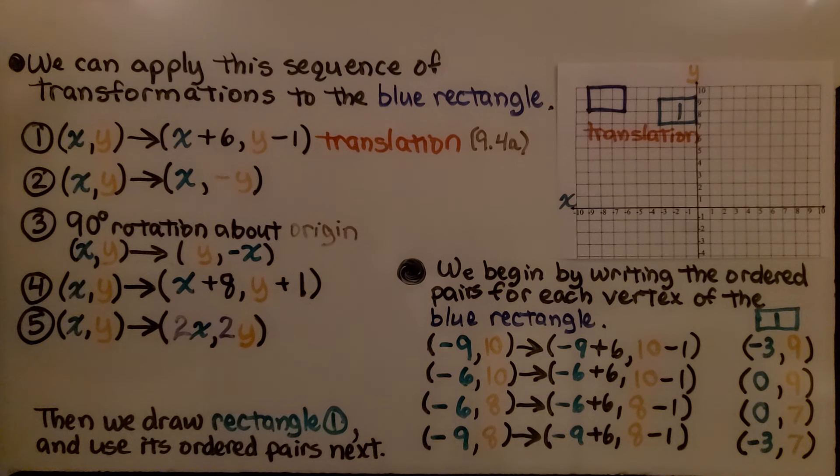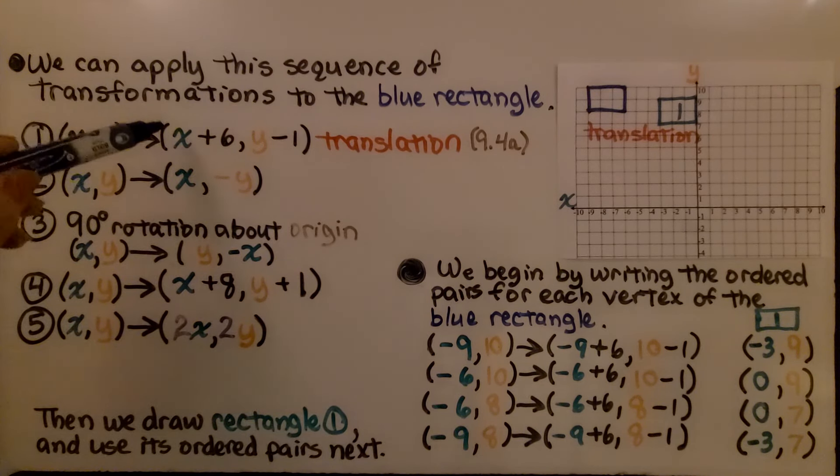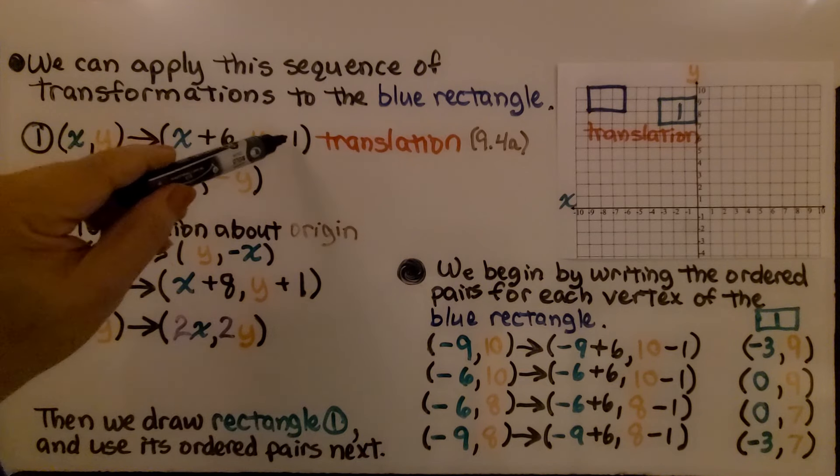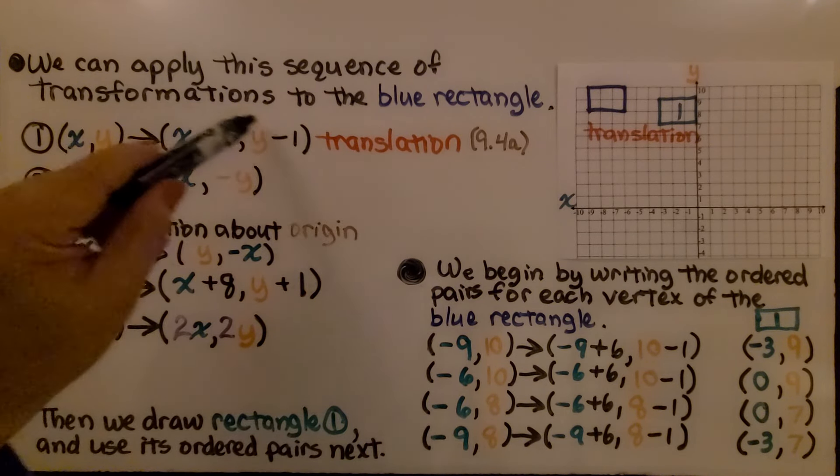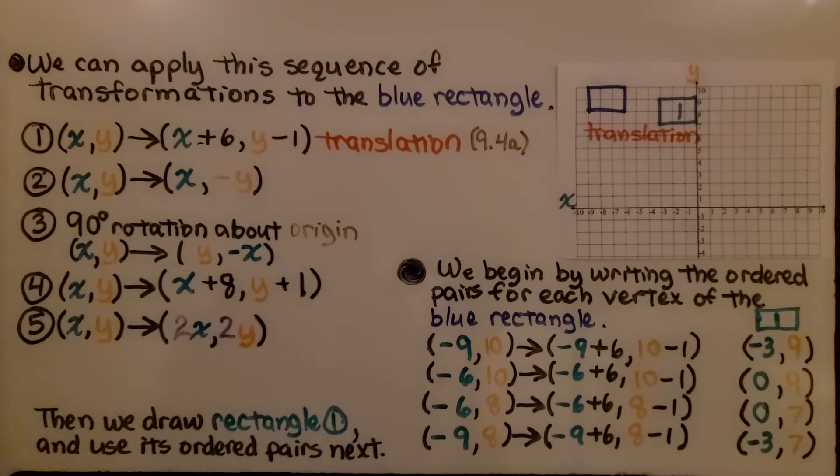So here we have a sequence of transformations, and we can apply this sequence of transformations to the blue rectangle. We see the first one says that for the x and y values, it'll map to x plus 6, y minus 1. Because of the plus 6 and the minus 1 being applied to the x and y values, we know that's a translation.